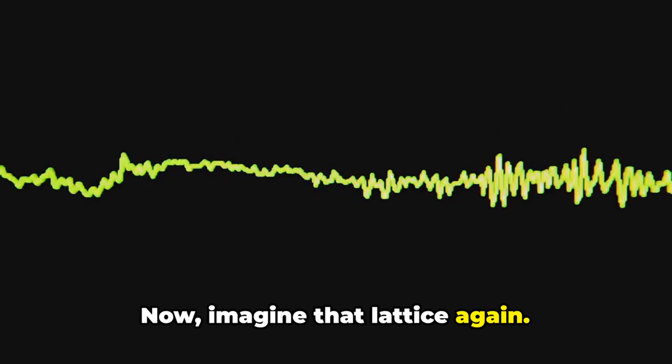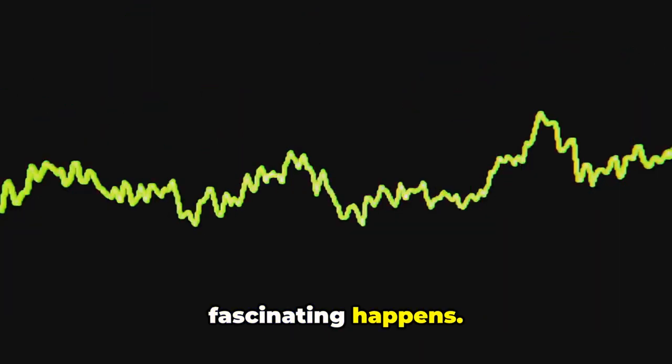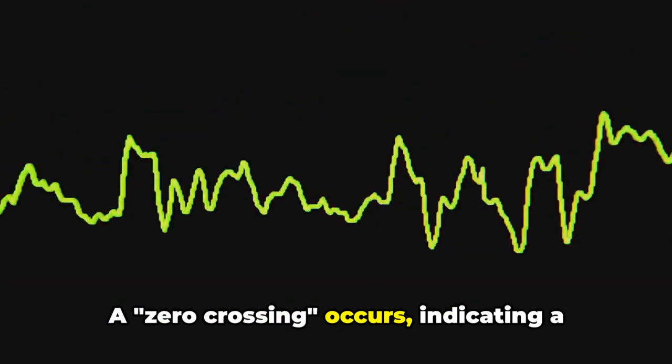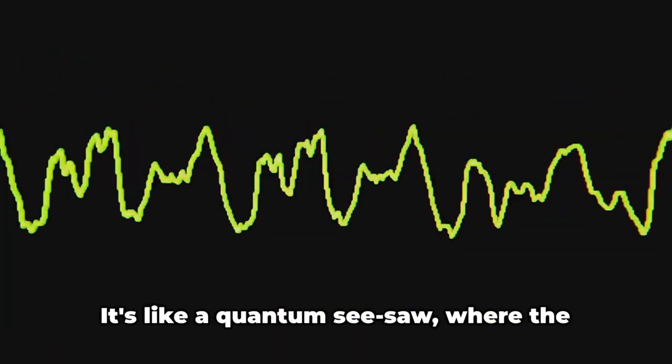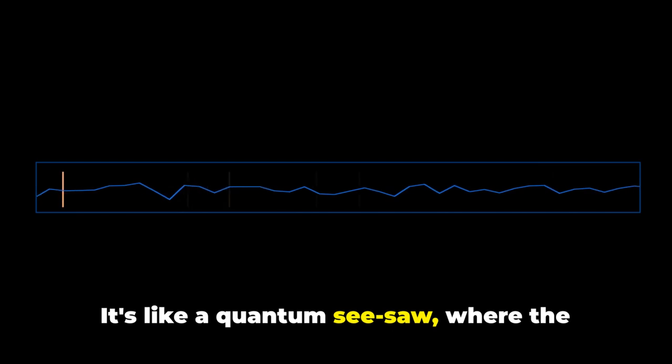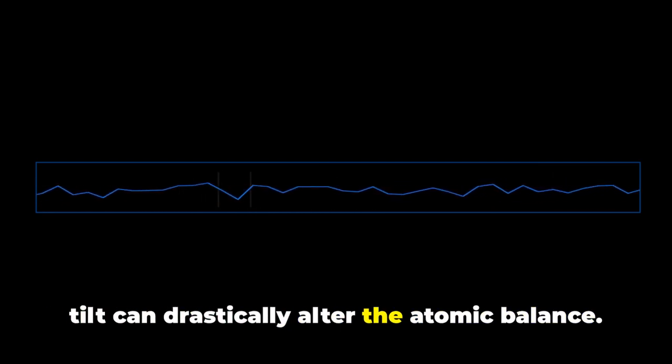Now, imagine that lattice again. At a specific angle, something fascinating happens. A zero-crossing occurs, indicating a transition in the frequency shift from positive to negative. It's like a quantum seesaw, where the tilt can drastically alter the atomic balance.